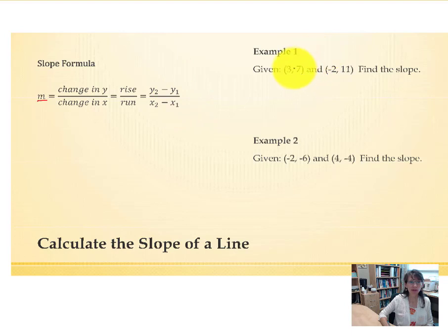If we are given two ordered pairs, remember that ordered pairs are an x paired with a y value. So each point has an x and y value. To find the slope m,